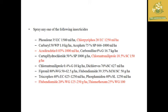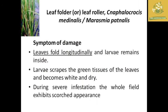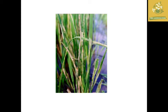Moving on to leaf folders or leaf rollers — scientific names are Marasmia paternalis and Cnaphalocrocis medinalis. The symptom of damage: leaves are folded longitudinally by the insect, larvae remain inside and scrape the green tissue of the leaves, which becomes white and dry. During severe infestation, the whole field exhibits a scorched appearance.